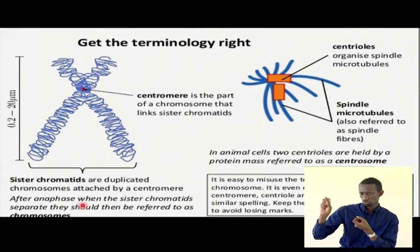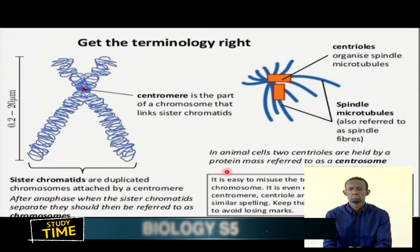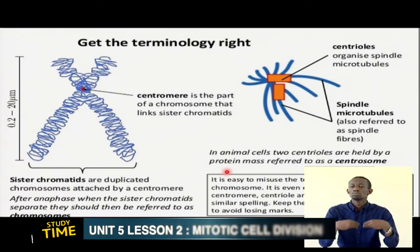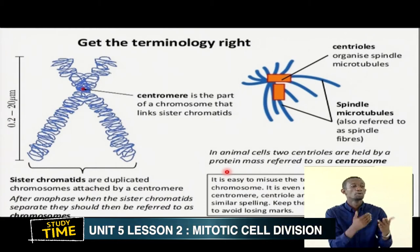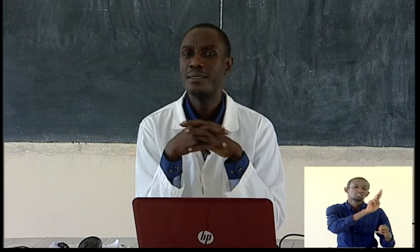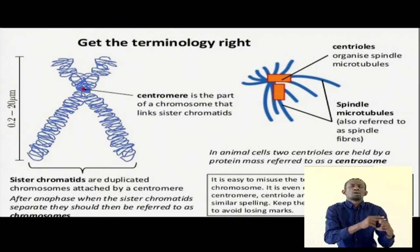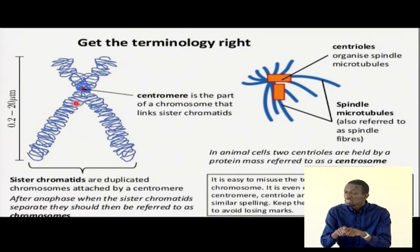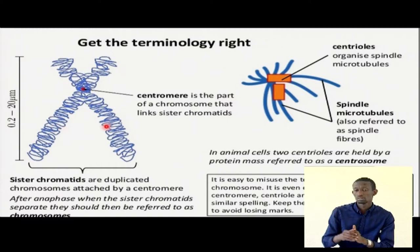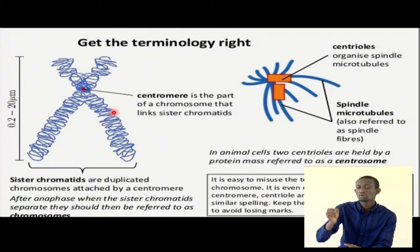Something important to note: it is very common — like the way we always accidentally give people names that don't belong to them. You want to say Sarah, you say Sandra; you want to say Sandra, you say Sandrine. The same applies to these terms: it is easy to misuse the terms chromatid and chromosome. A chromosome contains chromatids — those are the structural components.